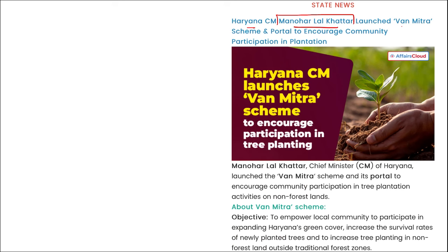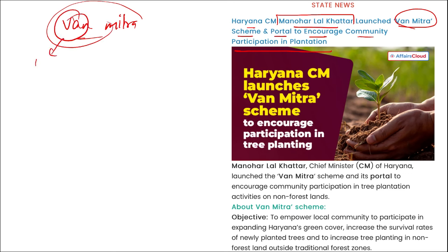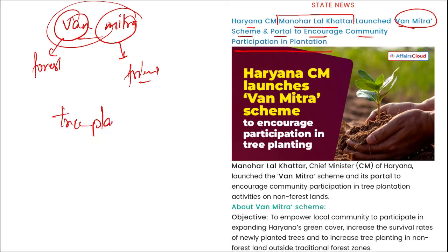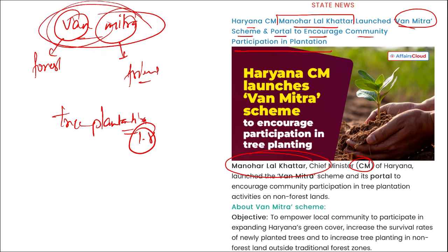In state news: Haryana's Chief Minister Manohar Lal Khattar launched the Van Mitra scheme and portal to encourage community participation in plantation. 'Van' means forest and 'Mitra' means friend — a scheme encouraging community participation in tree plantation. Families with an annual income of less than Rs. 1.8 lakh can join the scheme. Eligible people between the ages of 18 to 60 can register and become Van Mitras.